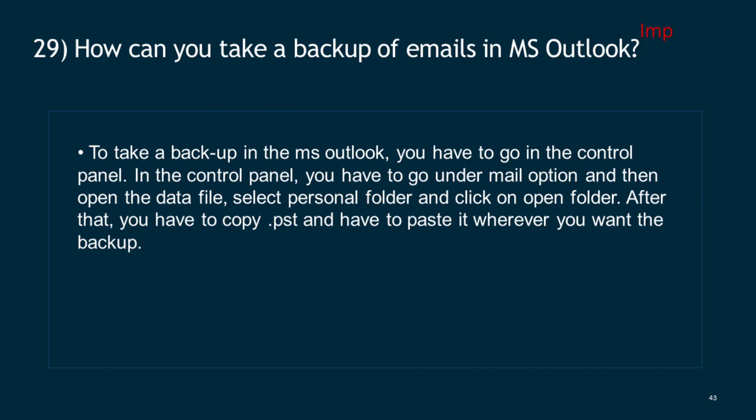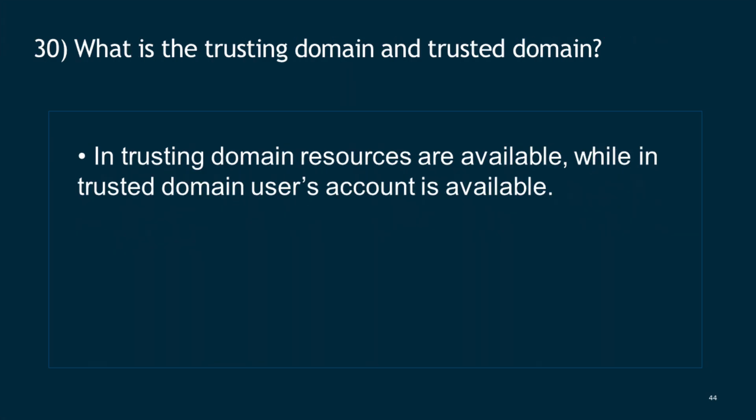Question 29: How can you take a backup of emails in MS Outlook? To take a backup in MS Outlook, go to the Control Panel, then go under Mail option and open the Data File, select Personal Folder and click on Open Folder. After that, copy the .pst file and paste it wherever you want the backup. Question 30: What is the trusting domain and trusted domain? In a trusting domain, resources are available, while in a trusted domain, user accounts are available.